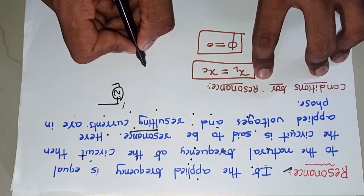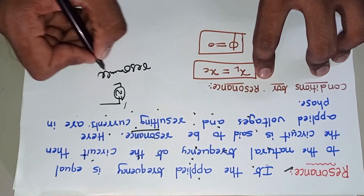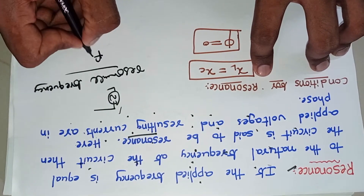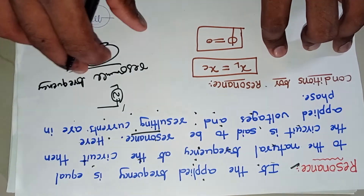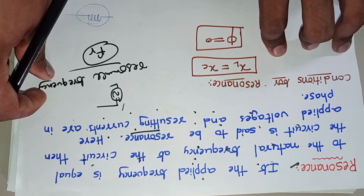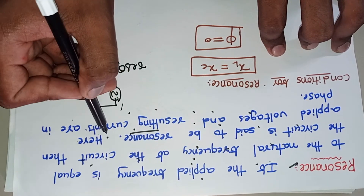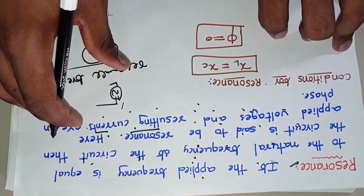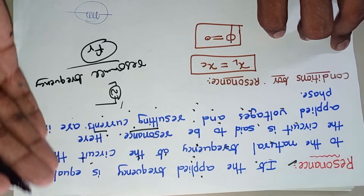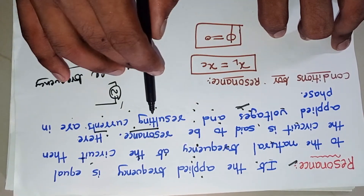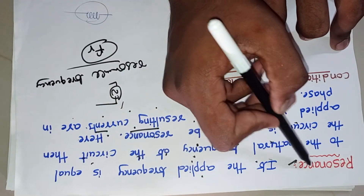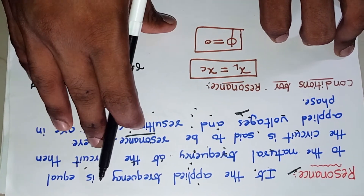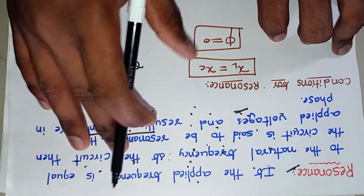One more important point is the resonance frequency, represented as FR. FR is the frequency at which the output is maximum. That frequency is the resonance frequency. Also, applied voltages and resulting currents are in phase — meaning if we apply voltage to the network and get a current response in other branches, both are in phase whenever the circuit is in resonance, giving high outputs or high response.